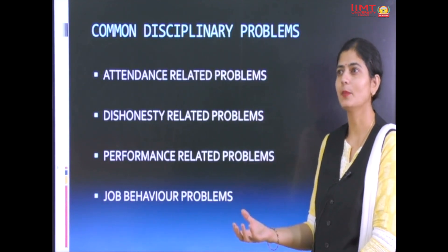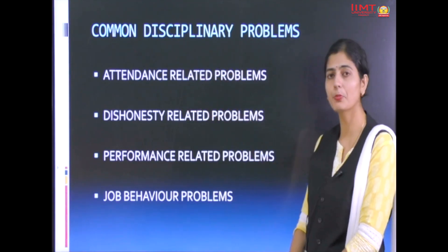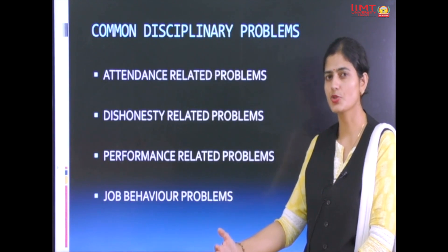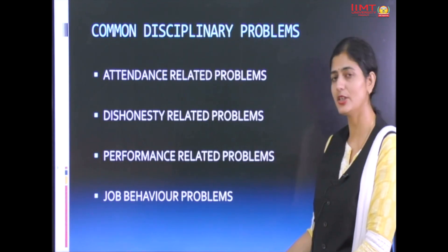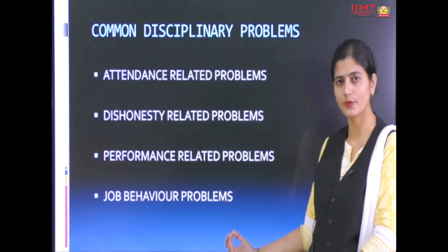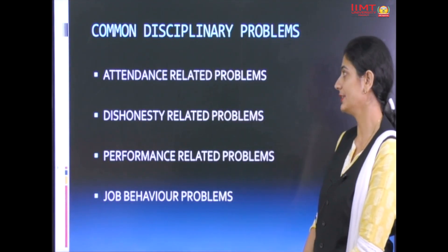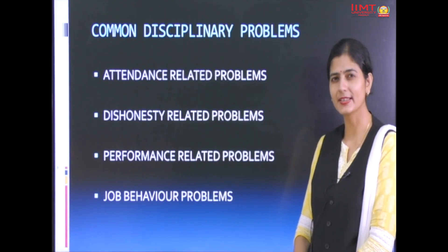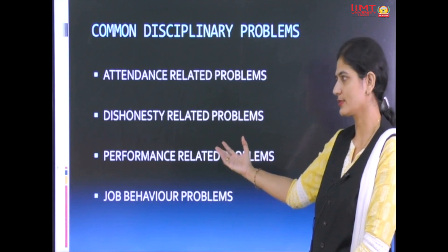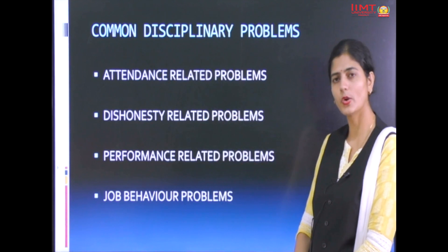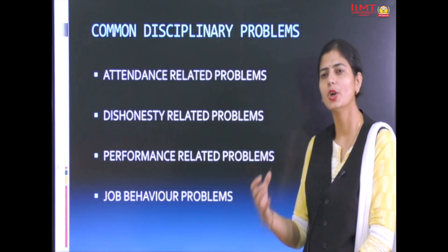What are the common examples of misconduct behavior in an organization? First is attendance-related problems: issues regarding absenteeism, late coming, long unplanned holidays, or taking holidays without authorized permission. Next comes dishonesty-related issues: when an employee commits theft, destroys organizational property, tells lies, or does not perform as per the standards. Next comes performance-related issues: when an employee is not able to perform as per the standard set, produces substandard products, or their performance falls below the targets set by the organization.